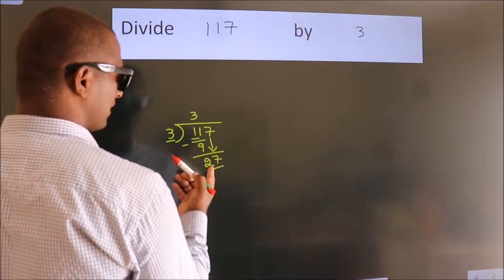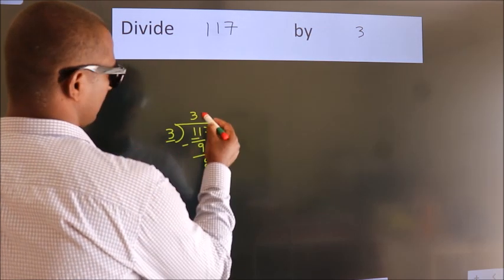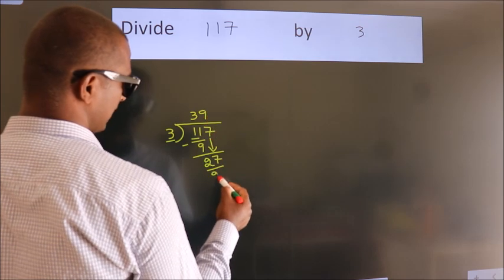When do we get 27? In 3 table, 3 9's 27.